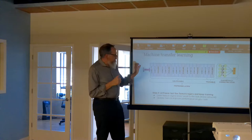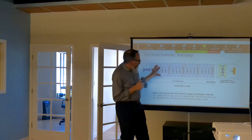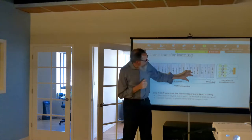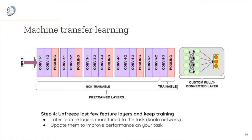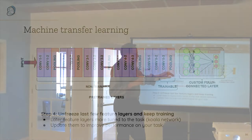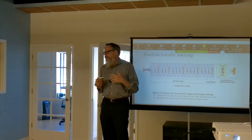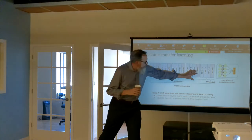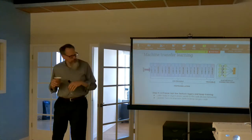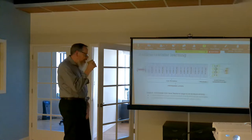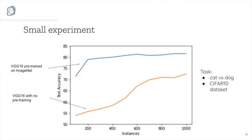In deep learning, features close to the input look a lot like edges and textures, and as you go further into the network they fine-tune themselves for the particular domain. If I'm trying to classify koala versus not koala, I'll get very koala-like features. But if I want koala versus dog, I need to fine-tune those last layers to build cat and dog features out of the earlier representations.